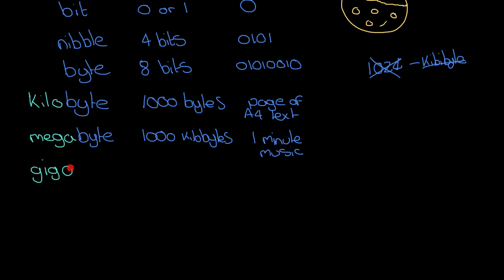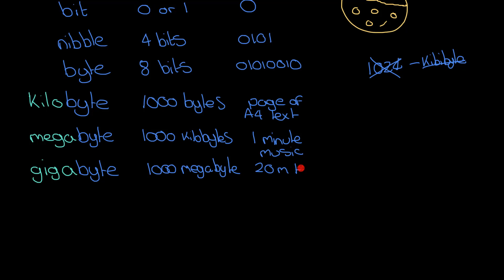Next is a gigabyte — 'giga' is Greek for giant — and that is a thousand megabytes. What can we fit in a gigabyte? A gigabyte is about 20 minutes of high-definition video, so if you're watching Netflix in HD, after 20 minutes you've streamed about a gigabyte of data.